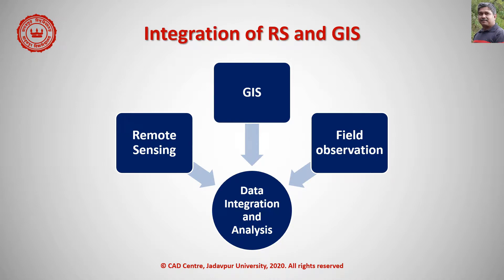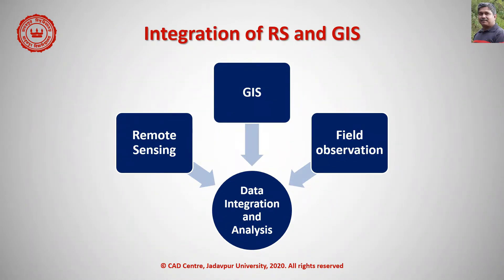Remote sensing is an important technique to study both spatial and temporal phenomena and is used for monitoring. Through the analysis of remote sensing data, one can derive different types of information that can be combined with other spatial data within the GIS. The integration of the two technologies creates a synergy in which GIS improves the ability to extract information from remotely sensed data, while remote sensing in turn keeps GIS up to date with actual earth surface information.